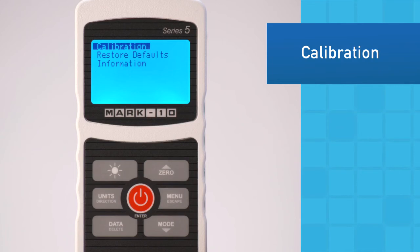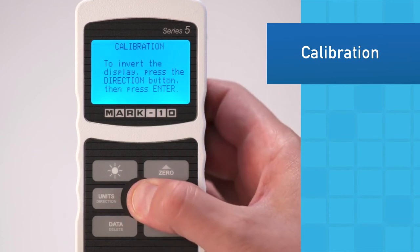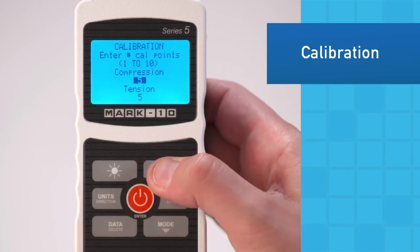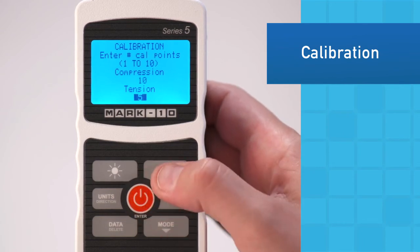Calibration is easily done utilizing dead weights or reference load cells. The user may select up to 10 data points in each measuring direction and may specify the exact weights of each data point in any supported unit of measurement.